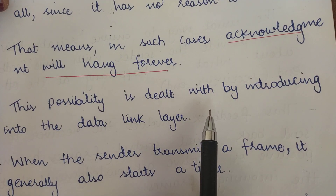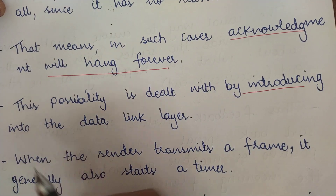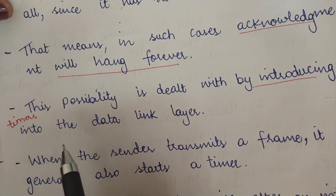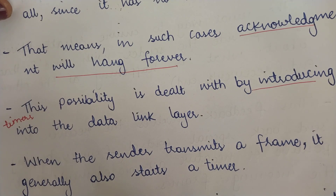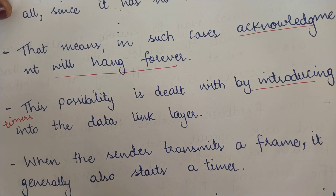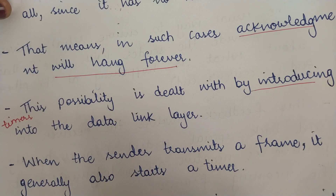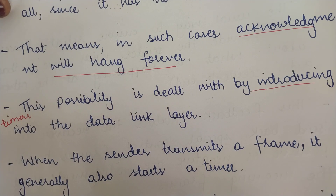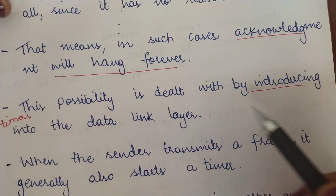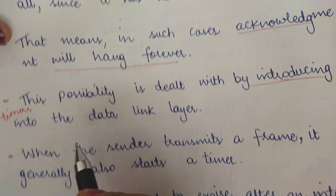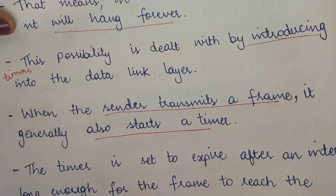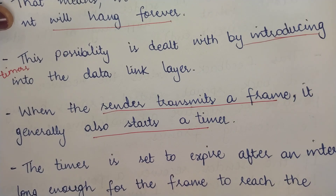This possibility is dealt with by introducing timers into the data link layer. If there is a positive acknowledgement, the sender knows data was properly received. If there is a negative acknowledgement, the sender knows data must be retransmitted. But when there is no acknowledgement, timers resolve the confusion. When the sender transmits a frame, it starts a timer — the clock starts ticking the moment a frame is sent.